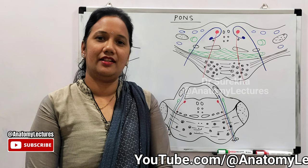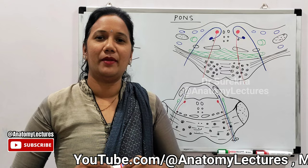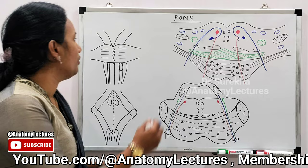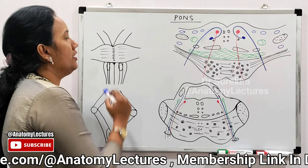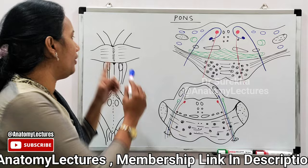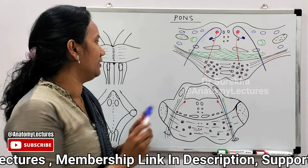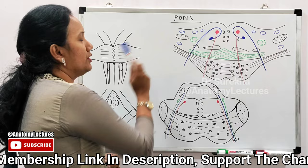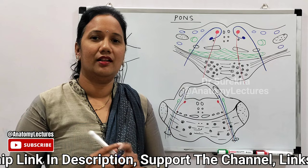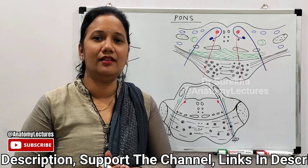So what is the pons? Pons is the center part of the brain stem, present between the midbrain and the medulla. It acts as a bridge connecting the two cerebellar hemispheres via the middle cerebellar peduncle. In Latin, pons means a bridge, and that is how it derived its name.